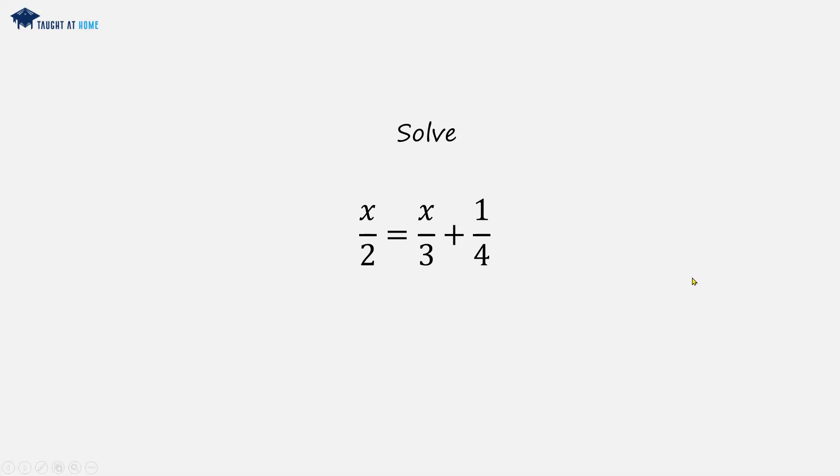Now we could cross multiply on this side and that side, but the best way is to multiply throughout by the lowest common multiple of 2, 3, and 4. Have a moment and think about what the lowest common multiple is. The lowest common multiple is 12.